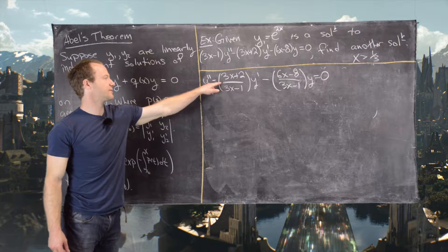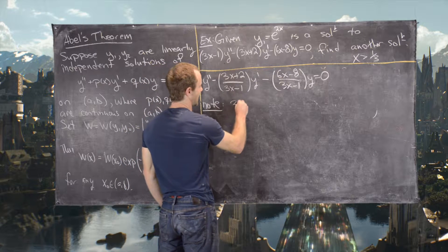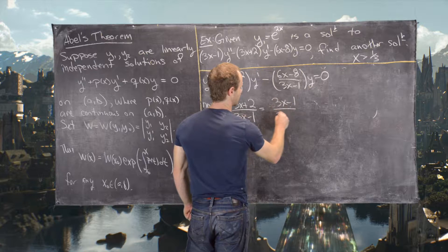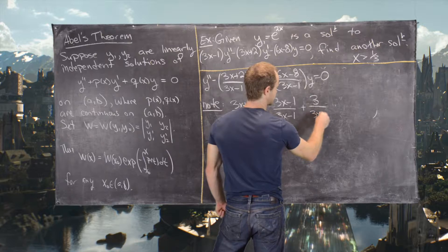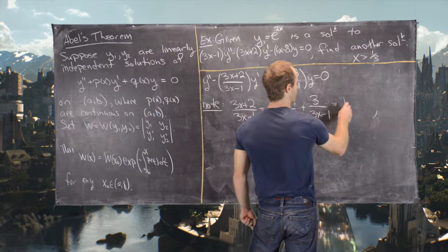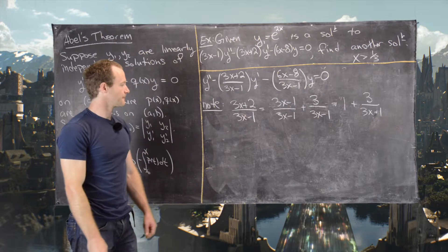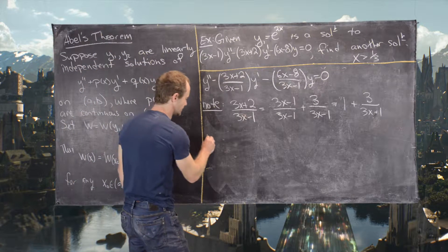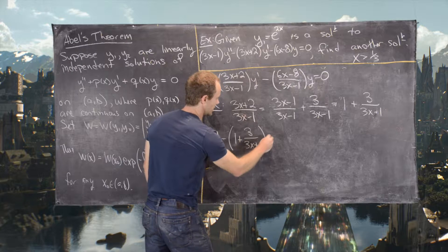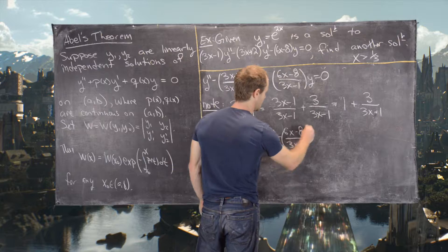We simplify p(x) by noting that (3x + 2)/(3x − 1) = (3x − 1)/(3x − 1) + 3/(3x − 1) = 1 + 3/(3x − 1). So the differential equation becomes y″ − [1 + 3/(3x − 1)]y′ − [(3x − 8)/(3x − 1)]y = 0.